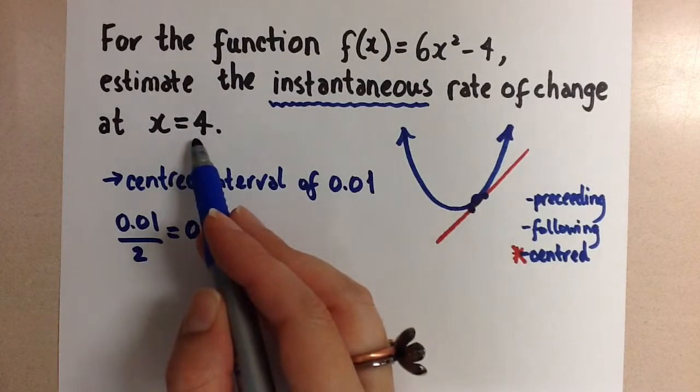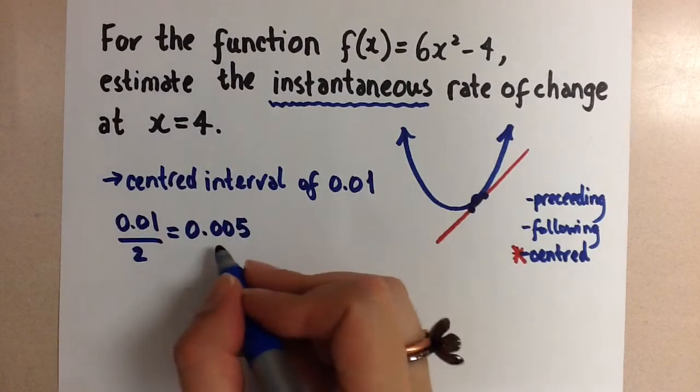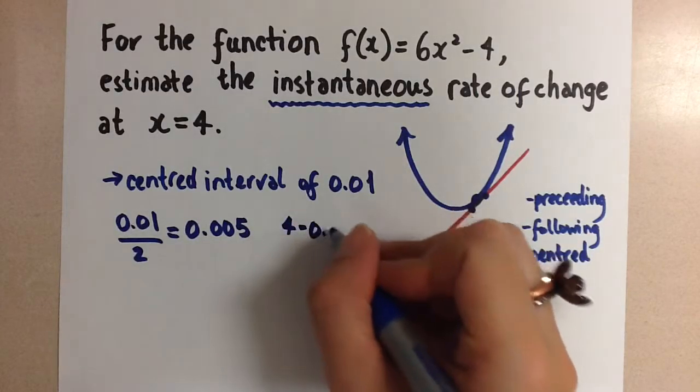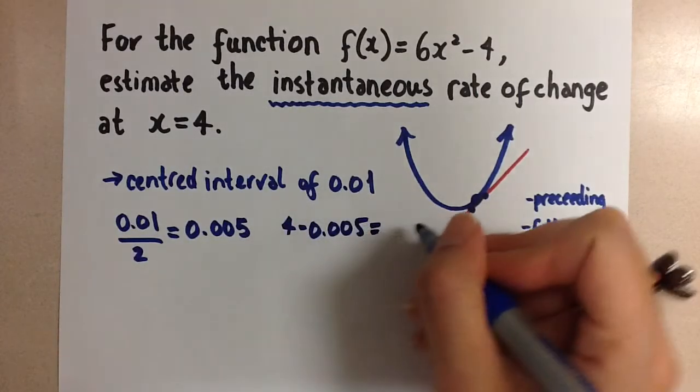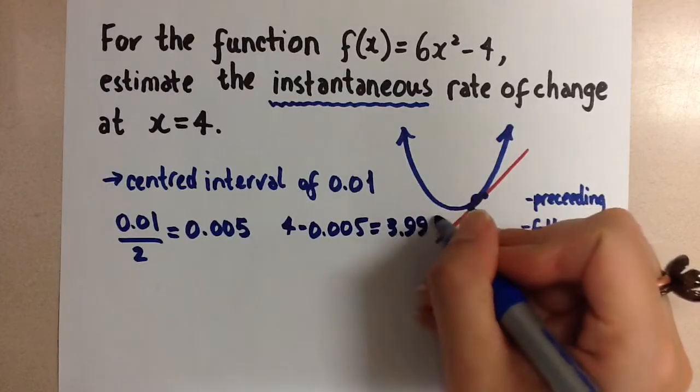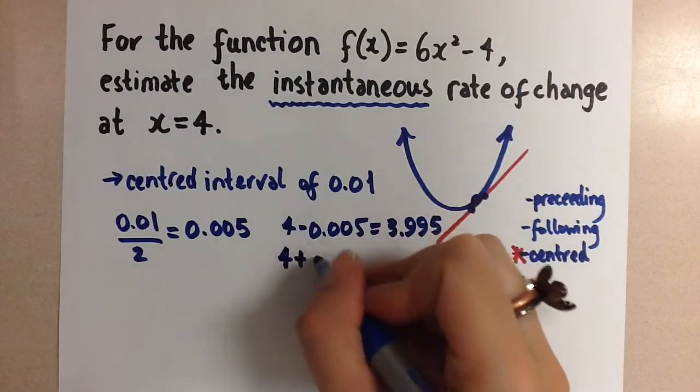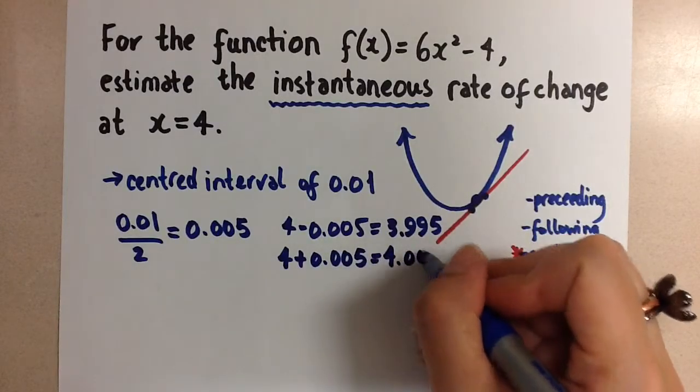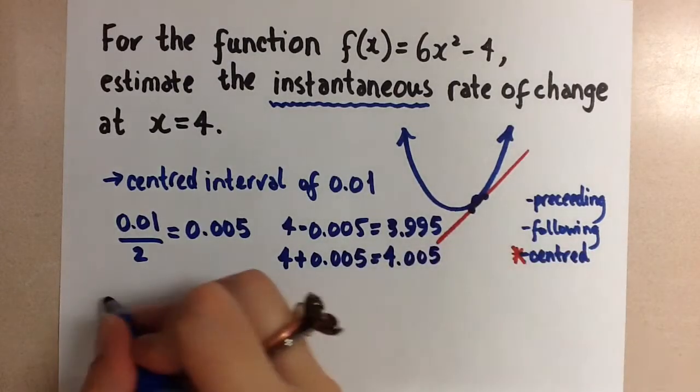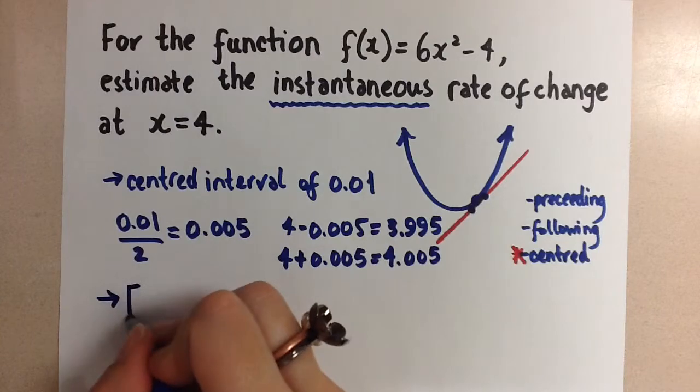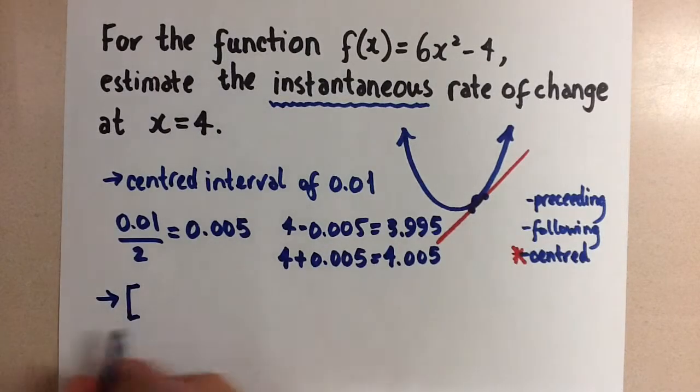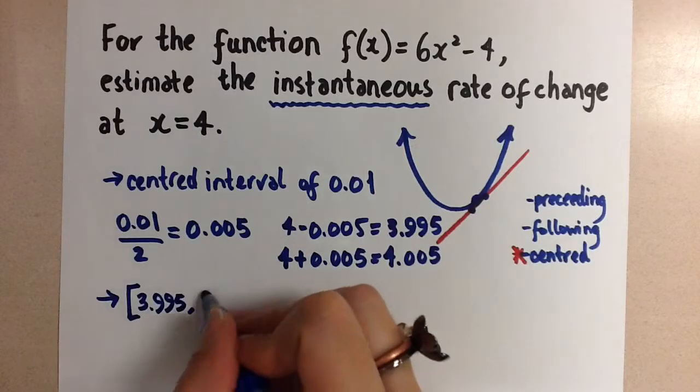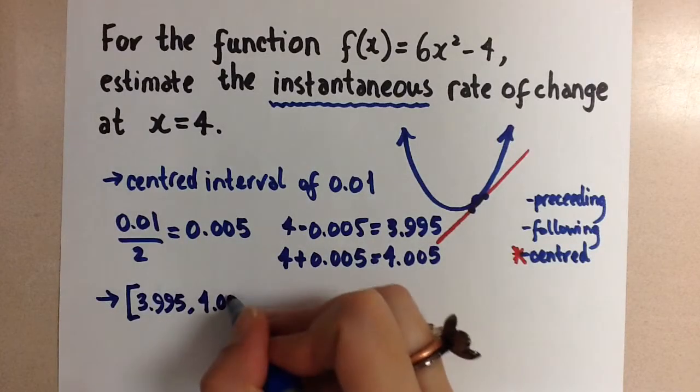And now, because we're trying to center it on the number 4, we're going to take the 4, subtract 0.005, that gives us 3.995. And then we're going to take the 4 and add the 0.005, and that gives us 4.005.